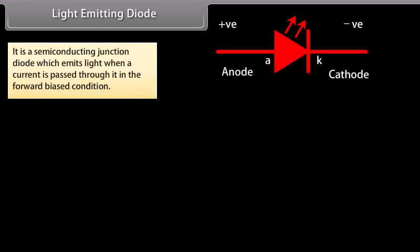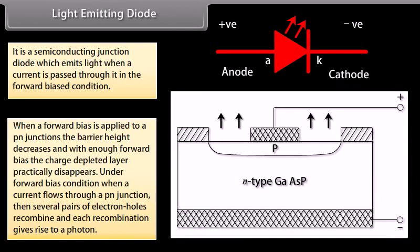Light emitting diode (LED): It is a semiconducting junction diode which emits light when a current is passed through it in the forward biased condition. It is a P-N junction made of gallium arsenide (GaAs) or some other suitable semiconducting material. The P-layer is made thin so that light energy may reach the charge depleted region after travelling a very short distance. When a forward bias is applied, the barrier height decreases and the charge depleted layer practically disappears.